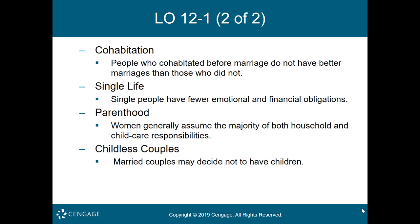Cohabiting may help some people clarify what they want in a mate and in a marriage, but cohabiting also has its problems — some similar to those encountered by newlyweds — such as adjusting to an intimate relationship, working out a sexual relationship, over-dependency on the partner, missing what one did when living alone, and seeing friends less. Common law marriage is a marriage considered valid by both partners but not formally registered with a state or church registry. Common law marriages can be contracted in nine states in the U.S., including Colorado, Iowa, Kansas, Montana, New Hampshire, South Carolina, Texas, and Utah.